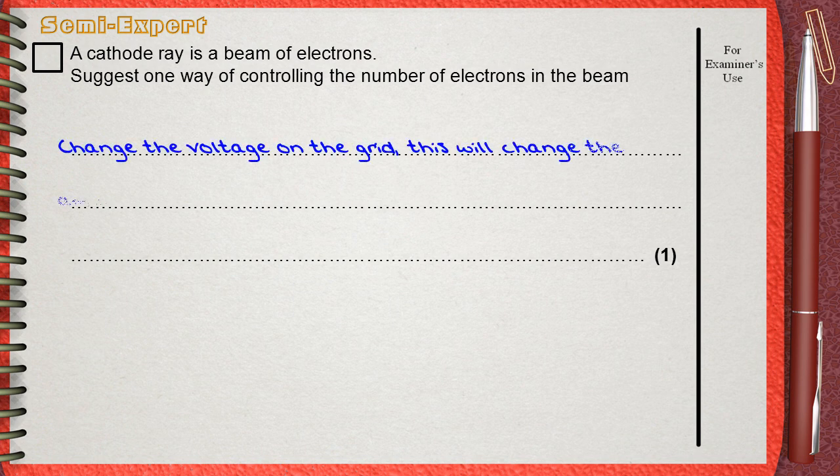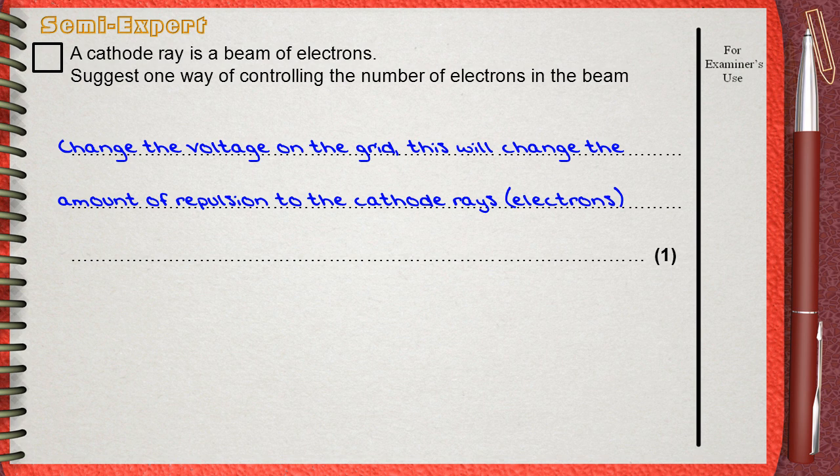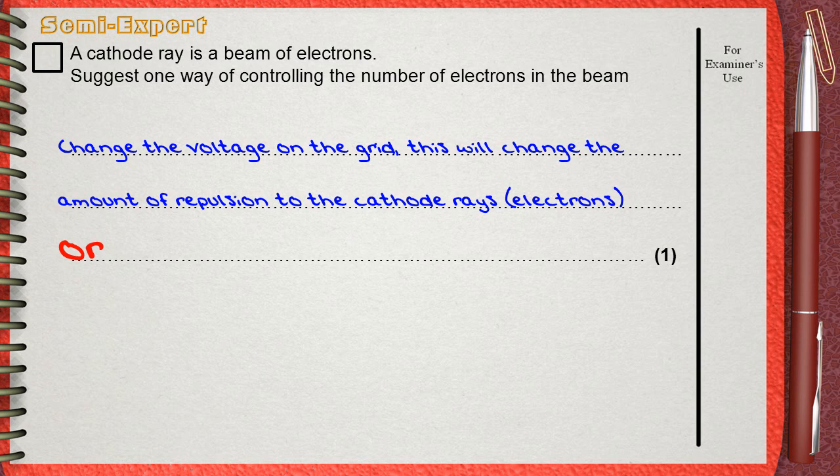We will answer the main method. Change the voltage on the grid. This will change the amount of repulsion to the cathode rays, which are the electrons.